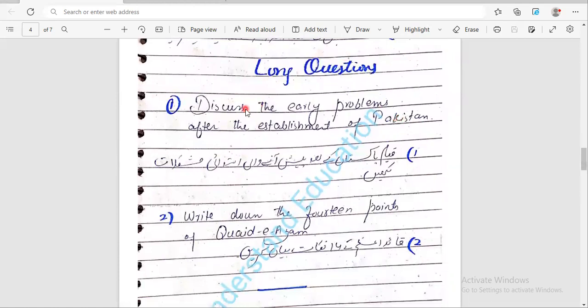So these are important. Two long questions from chapter number two: discuss the early problems after the establishment of Pakistan - the most repeated question that we have written about Pakistan, very famous and most repeated question. Question number two: write down the 14 points of Quaid-e-Azam.